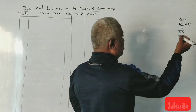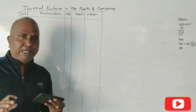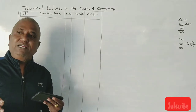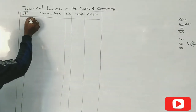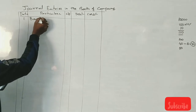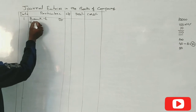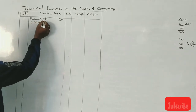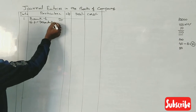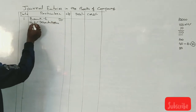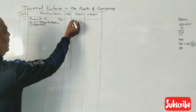Now, first journal entry: Bank account debit. 10,000 debentures into ₹20 application money equals ₹2 lakhs. So Bank A/c Dr. ₹2 lakhs to 6% Debenture Application Account ₹2 lakhs. Narration: Being debenture application money of ₹20 received.